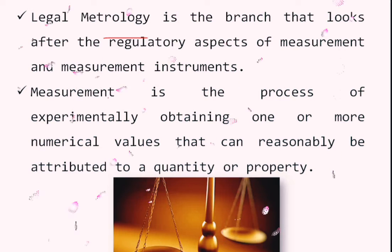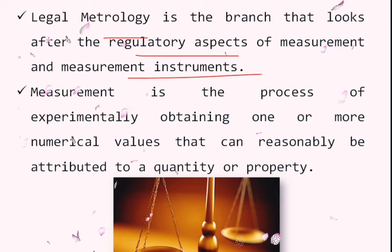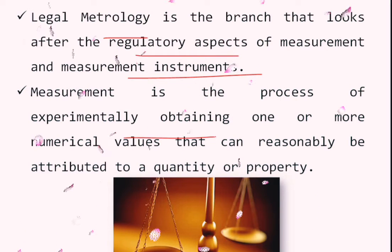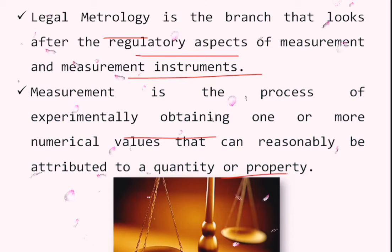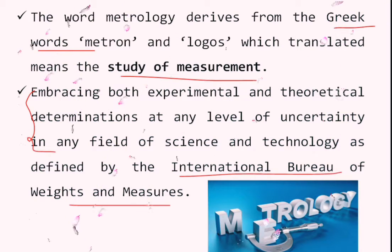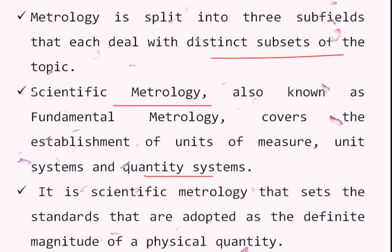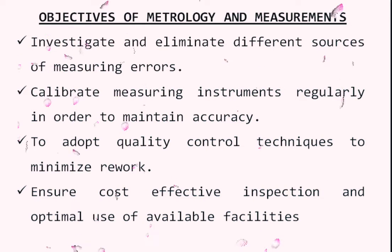Legal metrology is the branch that looks after the aspects of measurement and measurement instruments. Measurement is the process of experimentally obtaining one or more numerical values that can reasonably be attributed to a quantity or property. So the classifications of metrology are: scientific metrology, industrial metrology, and legal metrology.